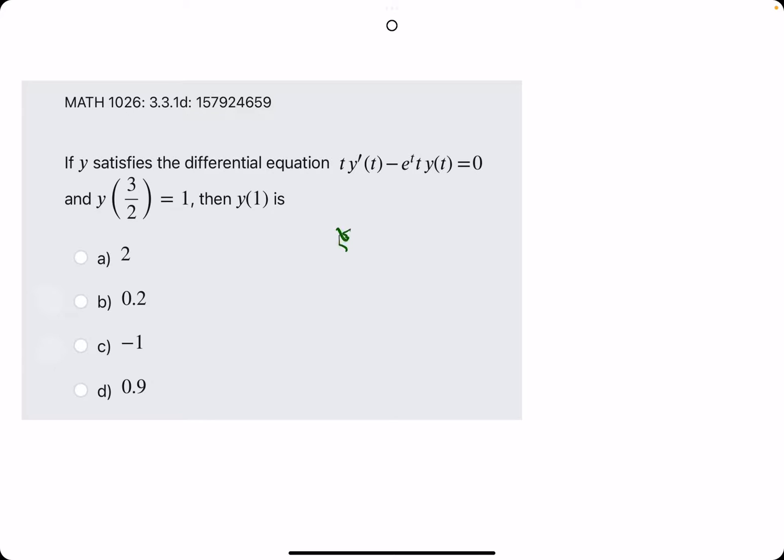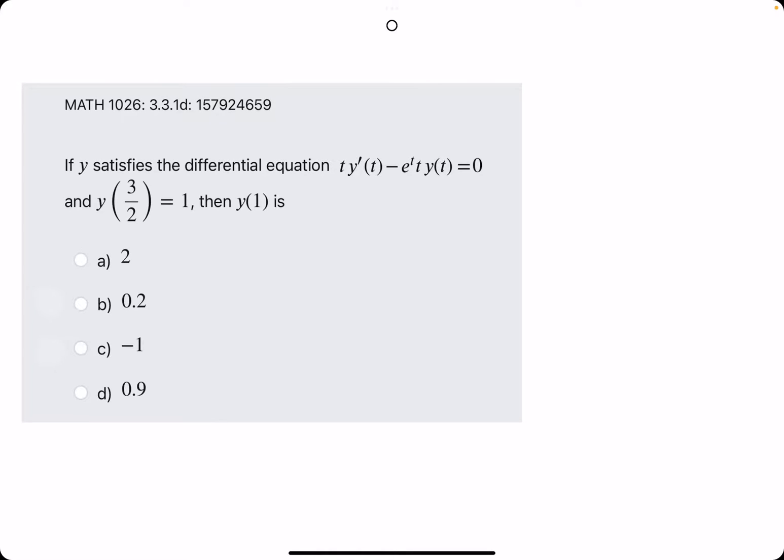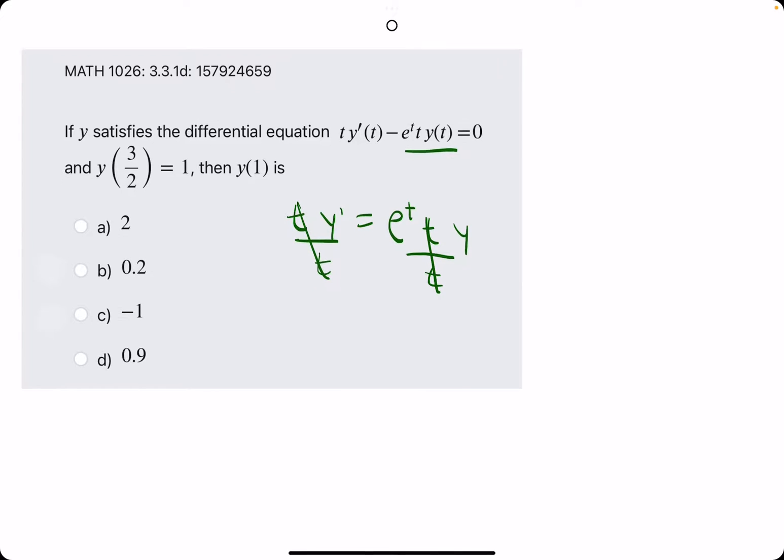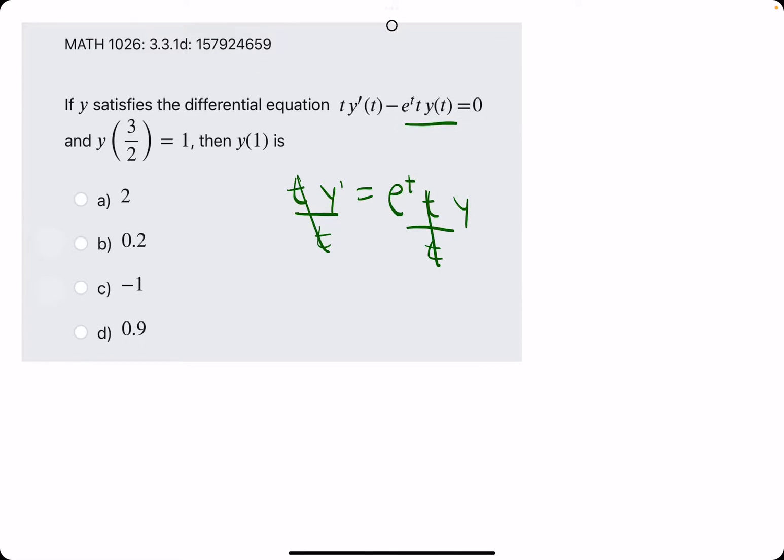So first things first, we want to isolate the y prime on the left side. We'll go ahead and add this whole term, e to the t, t times y to the right side. And we'll go ahead and divide by t on both sides. That will actually cancel the t out from both sides.